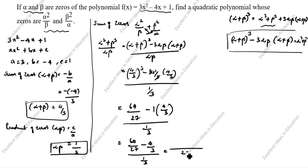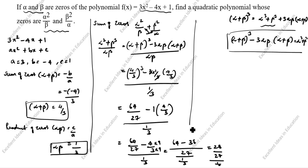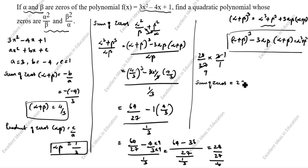Taking common denominator 27: 64 minus 9 × 4 = 64 - 36 = 28. So we get 28/27. Now dividing by 1/3 means multiplying by 3: 28/27 × 3/1 = 28/9. Therefore, the sum of the new zeros equals 28/9.